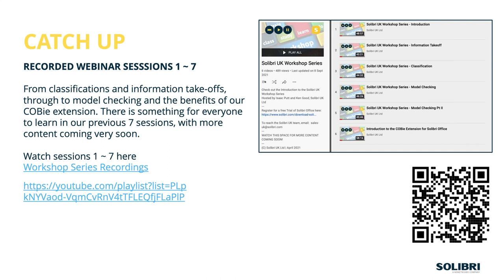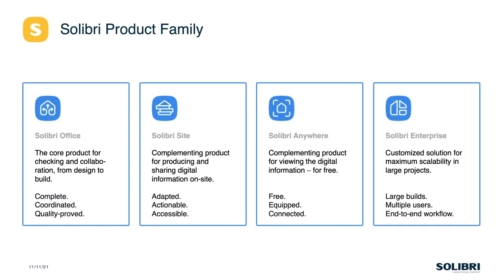The series one through seven covered loads of things from information takeoffs and classifications. We have done model checking part one and two, which is primarily around rule sets with some basic functionality. We have an introduction which talks about the workflow of Solibri, going into detail on what the bigger picture is. We've also done a session with Simon Gilbert on Covey extension two. This is number eight. Number seven, which actually isn't highlighted in the image, was the solution center — for those of you that manage licenses, manage users, and want to know how to access the software and download extensions. You can find that all on YouTube.